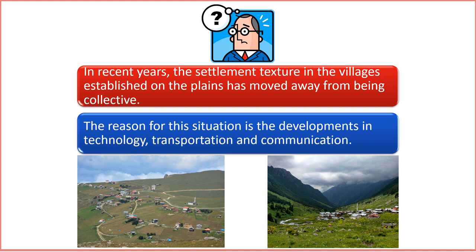6. Urbanization influence. The allure of urban opportunities, including better education, employment, and amenities, may encourage villagers to establish homes in more dispersed patterns while still maintaining connections to their rural roots. This shift in settlement patterns reflects the dynamic interplay between technology, societal changes, and economic developments. While it brings about new opportunities and choices for individuals in rural areas, it also underscores the impact of broader transformations on traditional ways of communal living.